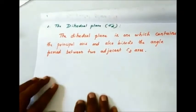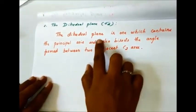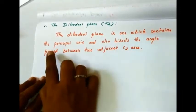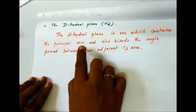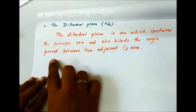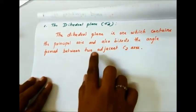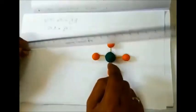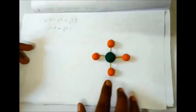The dihedral plane is one which contains the principal axis and also bisects the angle formed between two adjacent C2 axes.